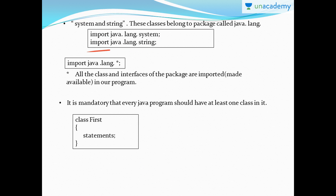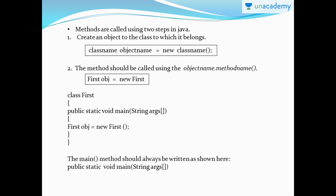A Java library contains packages, and those packages contain classes and interfaces, which in turn must contain methods. Both import statements can be written into a single package statement using the star symbol to simplify writing Java programs. For every Java program a class is mandatory - you can include any number of statements, and you can add methods or anything you want to execute within those statements.